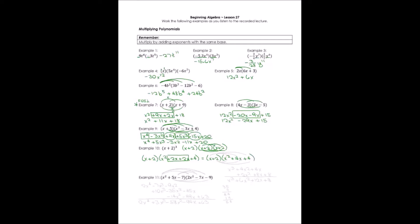Now the problem is a binomial times a trinomial, the same as example 9. Multiplying x times x squared gives x cubed; x times 4x gives 4x squared; x times 4 gives 4x. Then multiplying by 2: 2 times x squared gives 2x squared; 2 times 4x gives 8x; 2 times 4 gives 8. Terms are written on top of each other for easy combination.